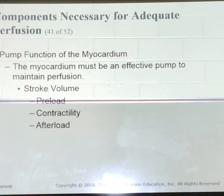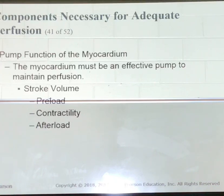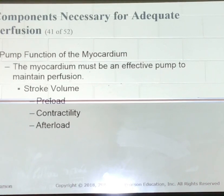Contractility — this is known as the Frank Starling law of the heart. As blood fills the left ventricle, it stretches the muscle fiber. The stretch of the muscle fiber determines the force available to eject the blood from the ventricle. You need to know there is a limit to the Frank Starling law.